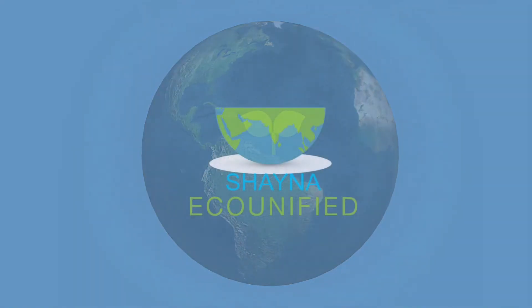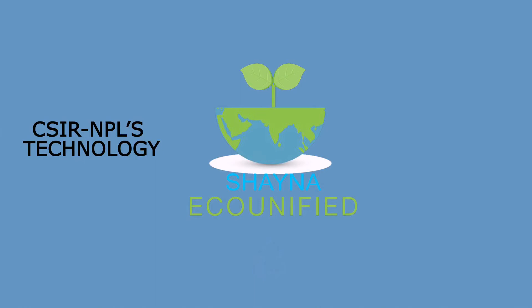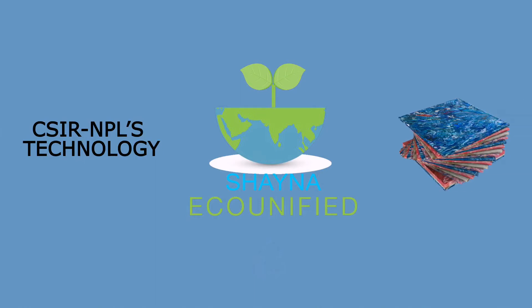China Eco Unified Private Limited is the first company to use CSIR National Physical Laboratory's technology to recycle waste plastic to plastic tiles. This technology aims to offer sustainable solution to the rising plastic waste hazard, which is eco-friendly, cost-effective and durable.